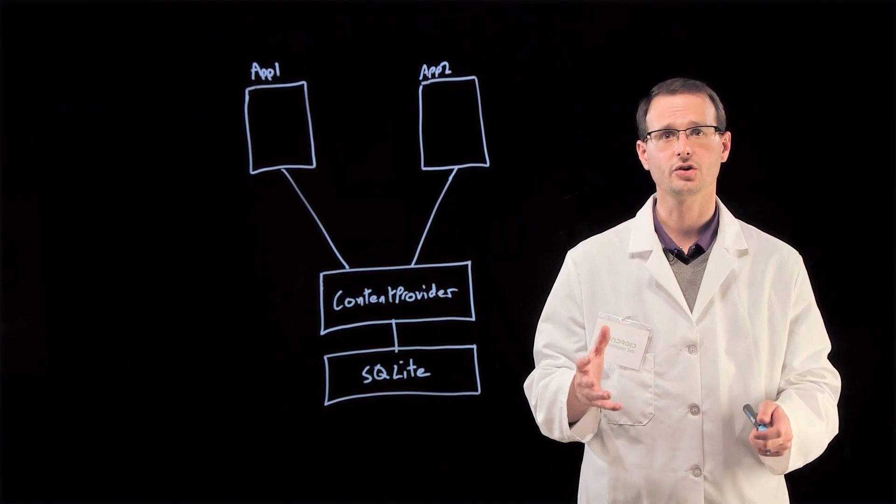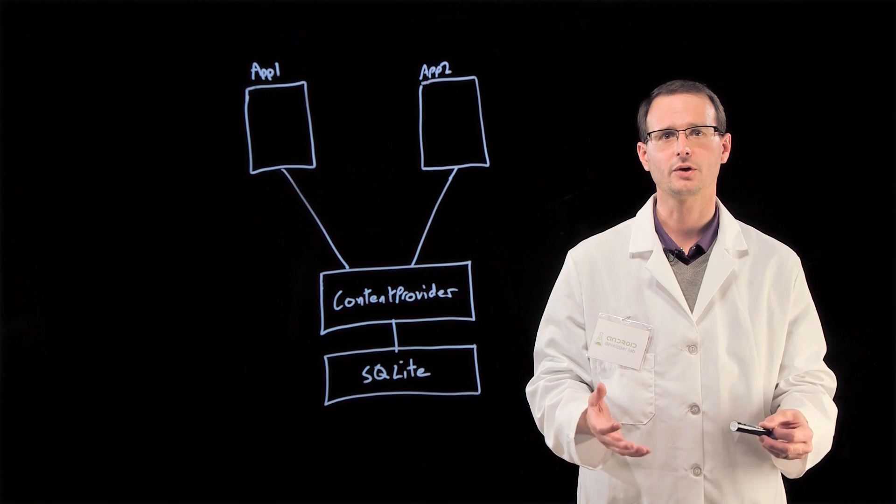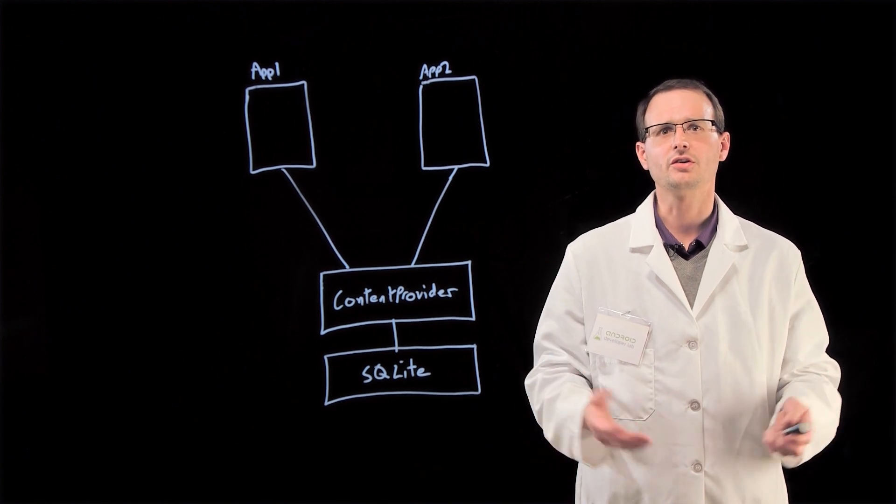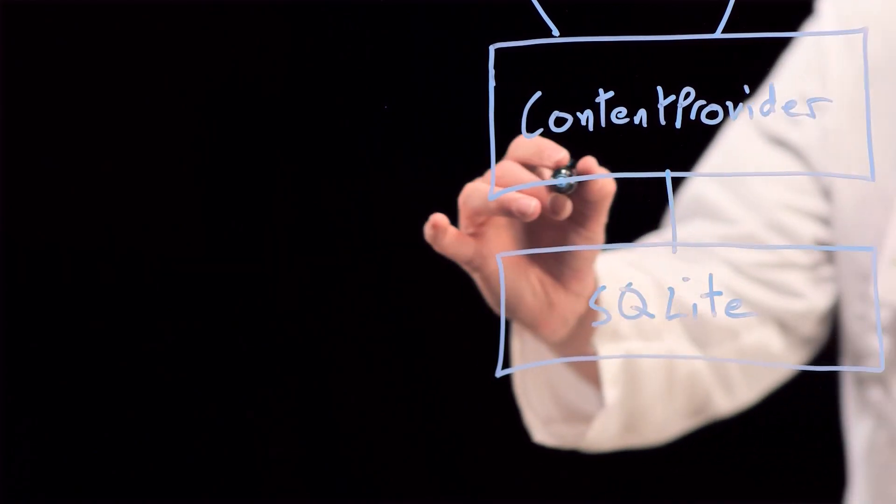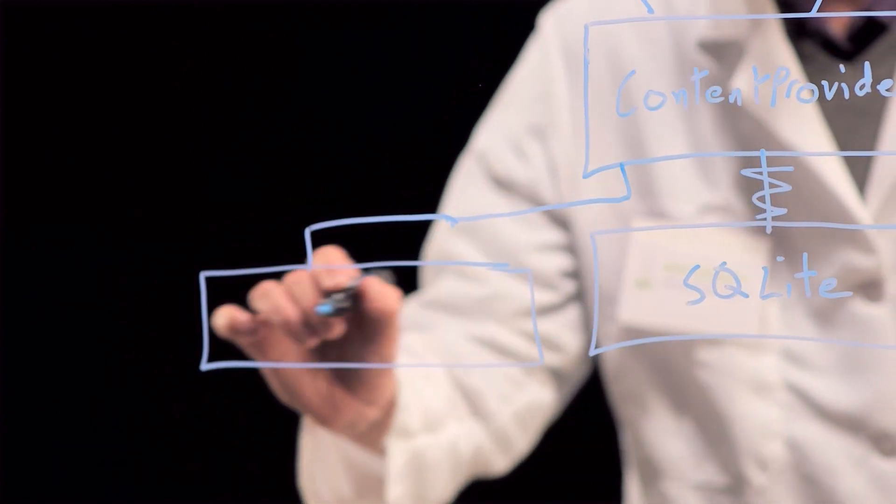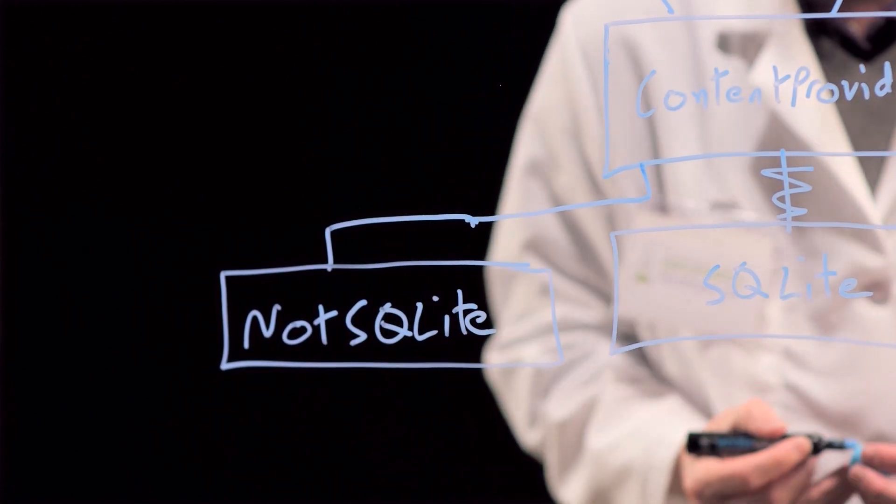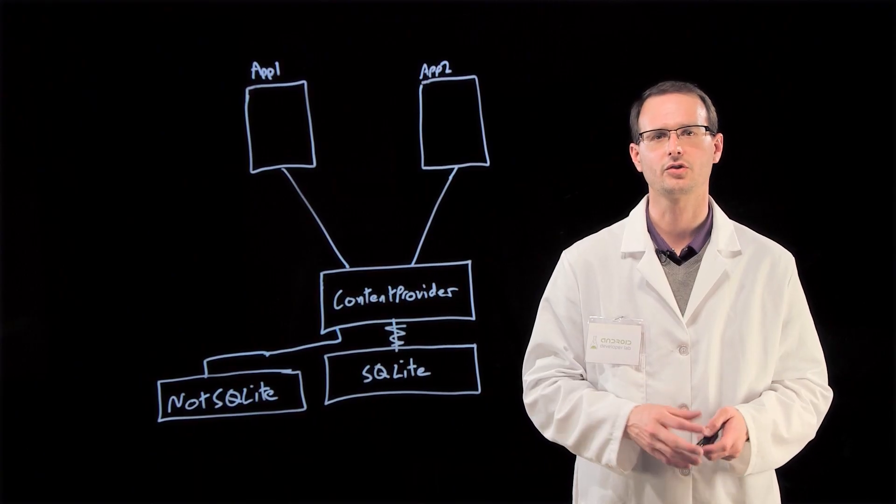For example, in Sunshine we're using SQLite, but you could be storing data in files, dynamic runtime data, or even just a different database library. By using content providers, it's easier for you to potentially switch out the data source and much easier for someone other than you to manage the UI layer code without them having to understand the depths of your data storage implementation.